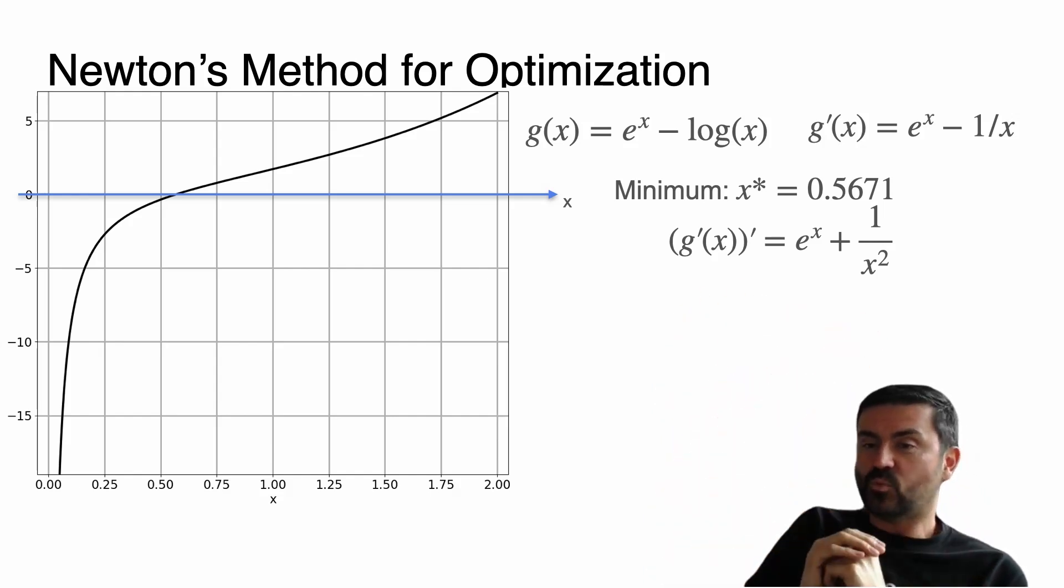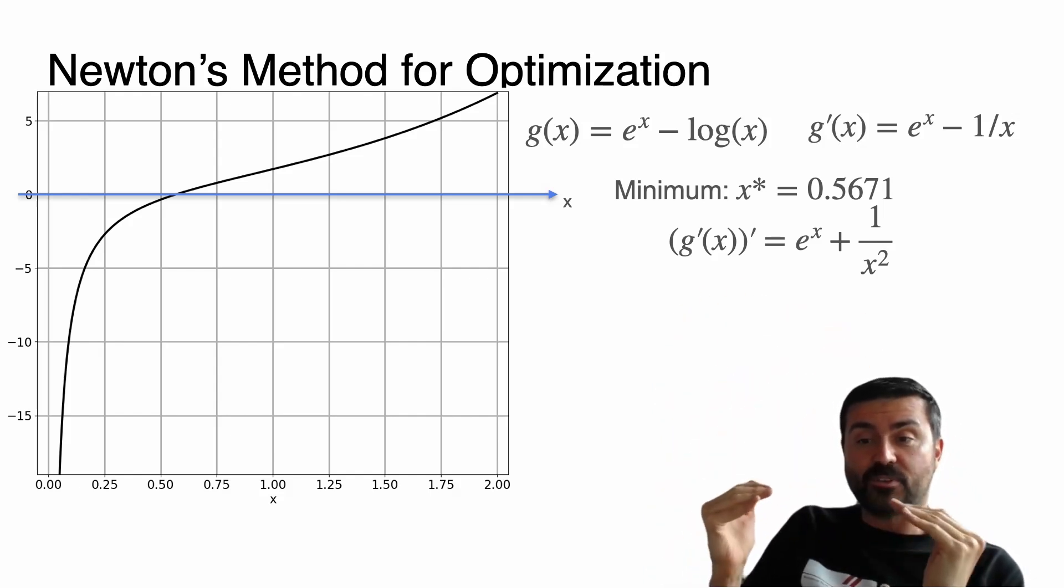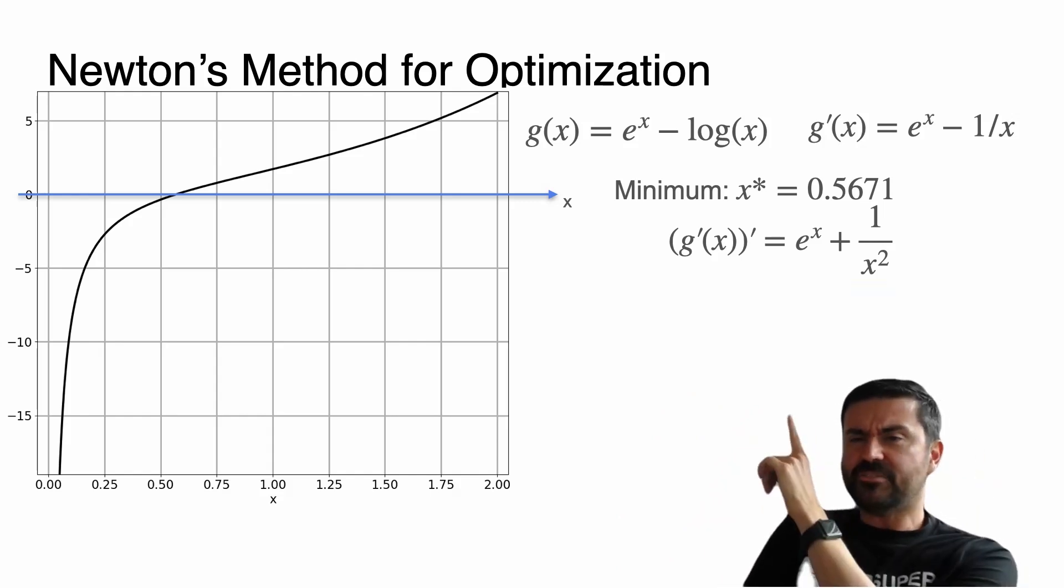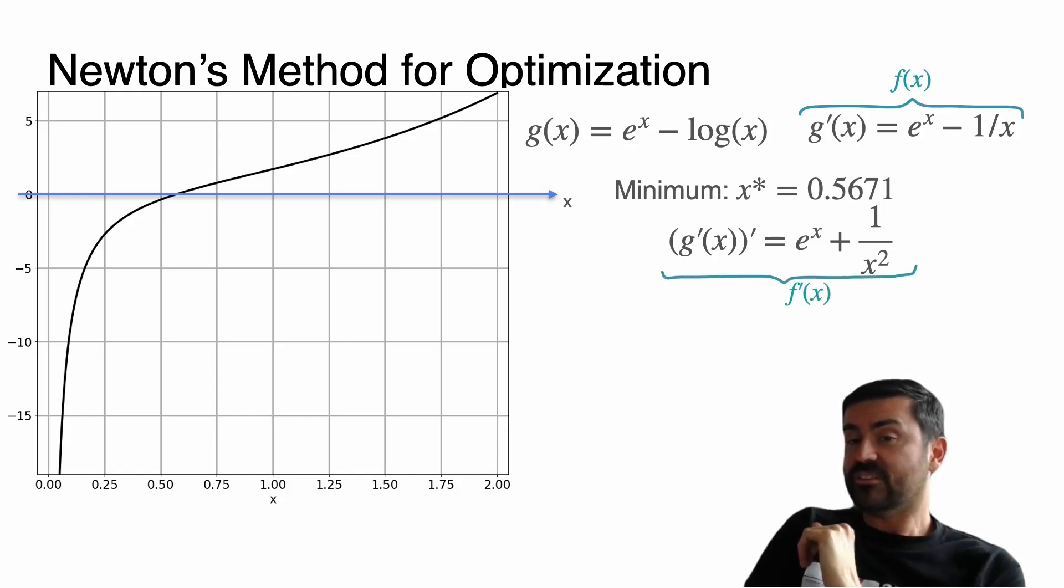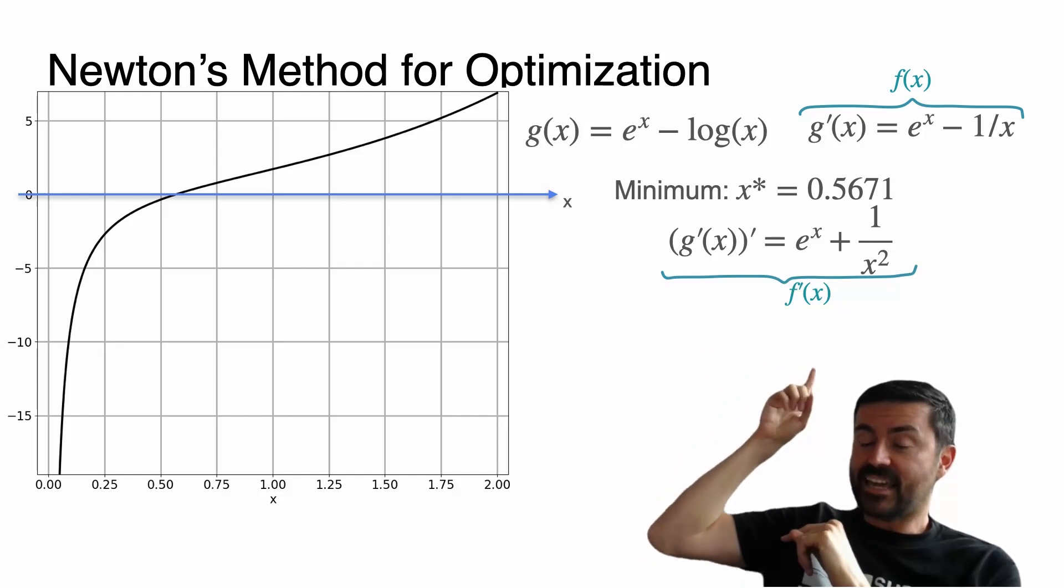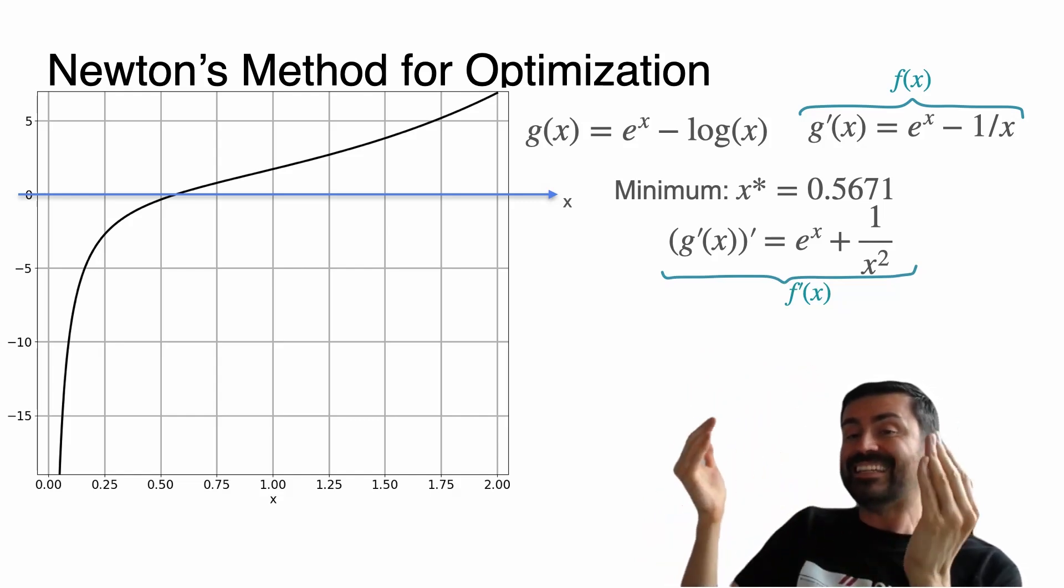It's really hard to get e^x - 1/x and solve for x to be equal to zero. But the derivatives are easy to take. So let's forget about g(x) because now all we care about is making the derivative zero. So let's call the derivative f(x) and let's call the derivative of the derivative f'(x). And this f is the one we're going to approximate its zero.